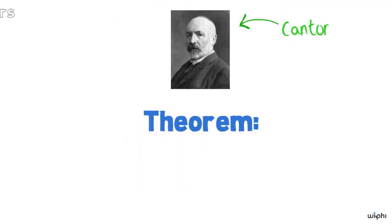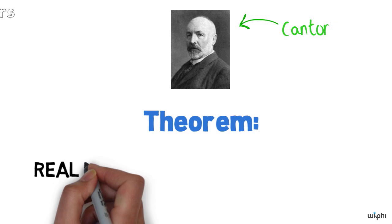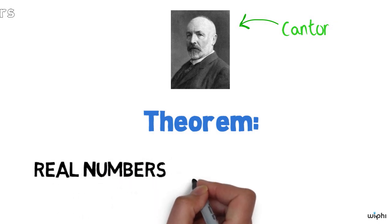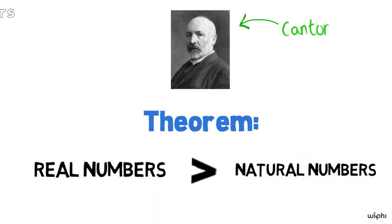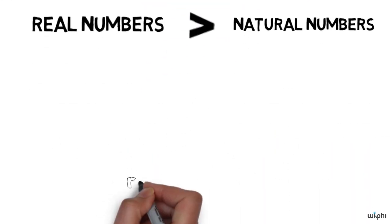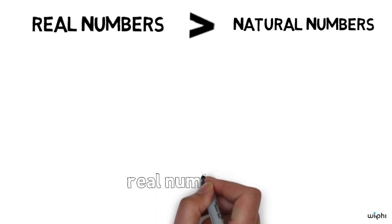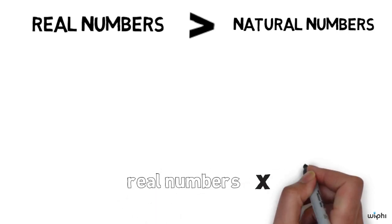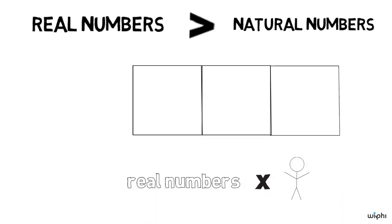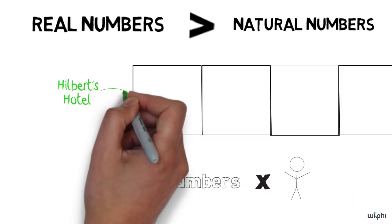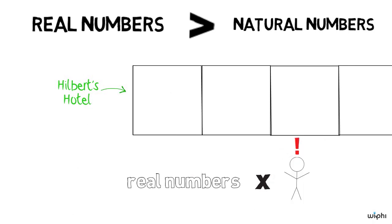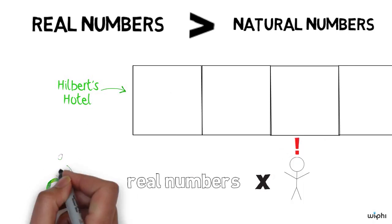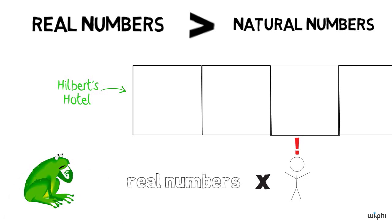What he showed is that there are more real numbers than natural numbers. So if as many new guests as real numbers showed up to the hotel, we could not accommodate them. In fact, we couldn't even accommodate them if the hotel was empty to begin with.